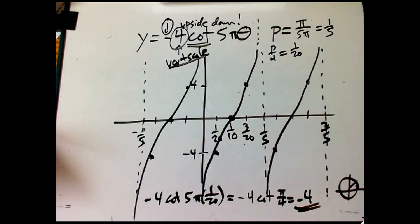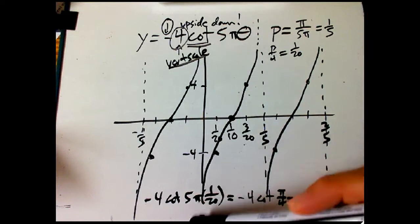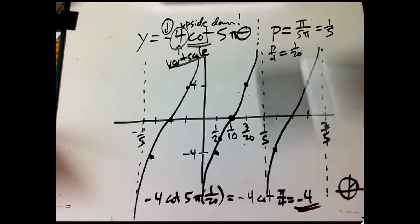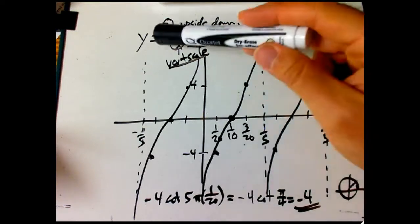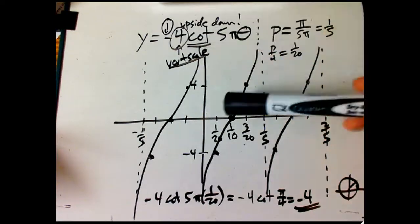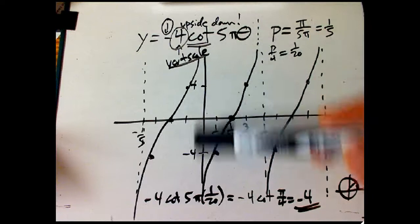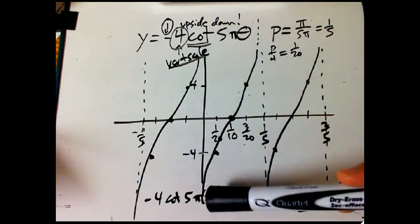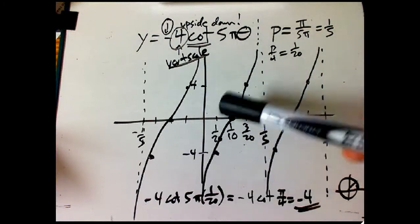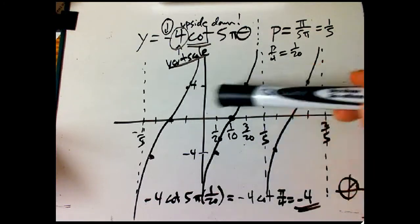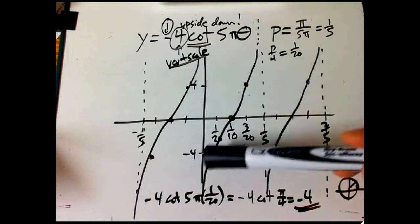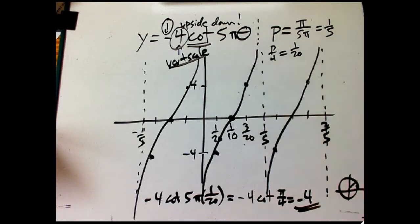So that's minus cotangent. Notice it kind of looks like tangent because it's going uphill, and it's negative. But what distinguishes it from tangent is where the asymptote falls: the asymptote for cotangent is on the axis, whereas for tangent the asymptotes are symmetrically around the axis and the curve goes through the origin.